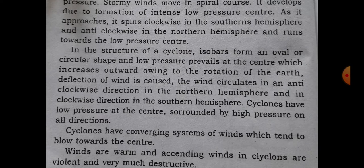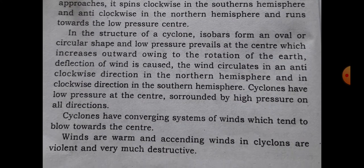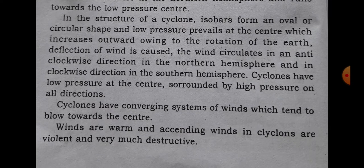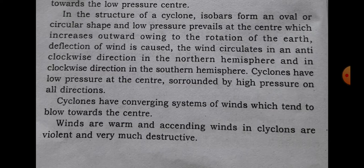In the structure of the cyclone, isobars form an oval or circular shape and low pressure prevails at the center, which increases outward owing to the rotation of the earth. Deflection of wind is caused. The wind circulation is in an anti-clockwise direction in the northern hemisphere and in clockwise direction in the southern hemisphere. Cyclones have low pressure at the center surrounded by high pressure on all directions. The cyclones have a converging system of winds which tends to blow towards the center. The winds are warm and ascending.